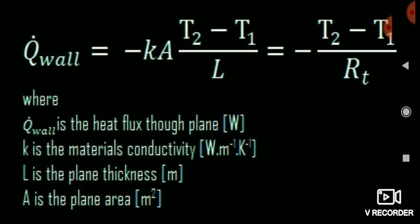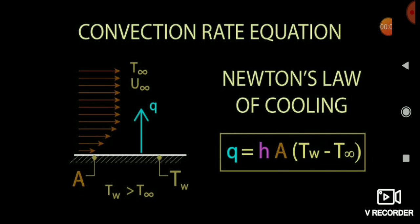Now let's look at convection. Convection is the process where heat is transferred from a material to the surrounding fluid — whether liquid or gas. The formula is: Q = hA(T_w - T_∞), where T_w is the wall temperature and T_∞ is the fluid temperature. The amount of heat flow per unit time equals h times area times temperature difference.